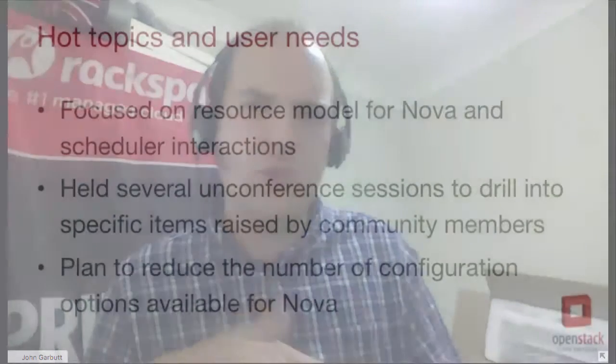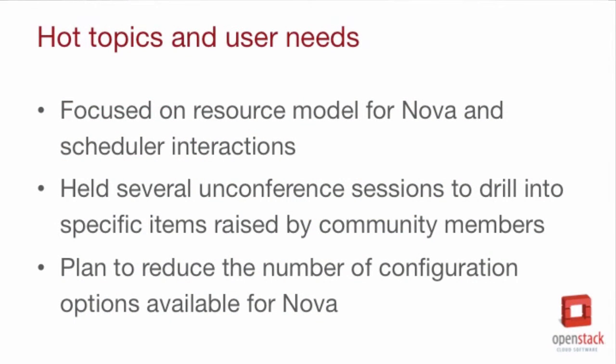Let's talk a little bit about the hot topics that you discovered in Tokyo at the Design Summit. What were some of the decisions and outcomes from these discussions? One of the things we spent a lot of time on was looking at the resource modeling — so how Nova and the scheduler interact — and coming up with a way to model that interaction and get a good version of the API there. There were lots of other good conversations focusing on specific issues, and we had some unconference sessions drilling into those specific issues to see how we can move forward. That was really productive.